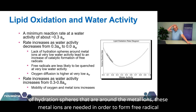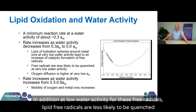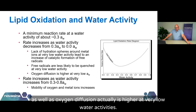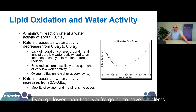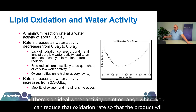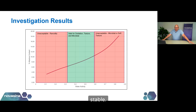Lipid oxidation is an interesting reaction in terms of its relationship to water activity. Most reactions increase as water activity increases and decrease as water activity decreases. But lipid oxidation is unique in that it starts to increase its rate of reaction at very low water activities. This is because the lack of hydration spheres around metal ions — which are needed to form lipid free radicals, necessary for oxidation to occur — means free radicals are less likely to be quenched at low water activity, and oxygen diffusion is actually higher at very low water activities. There is a minimum point — a water activity at which that oxidation will be at a minimum. Go lower than that and you'll have problems; go higher than that and you'll also have problems. So there's an ideal water activity range where you can reduce the oxidation rate so the product remains stable.